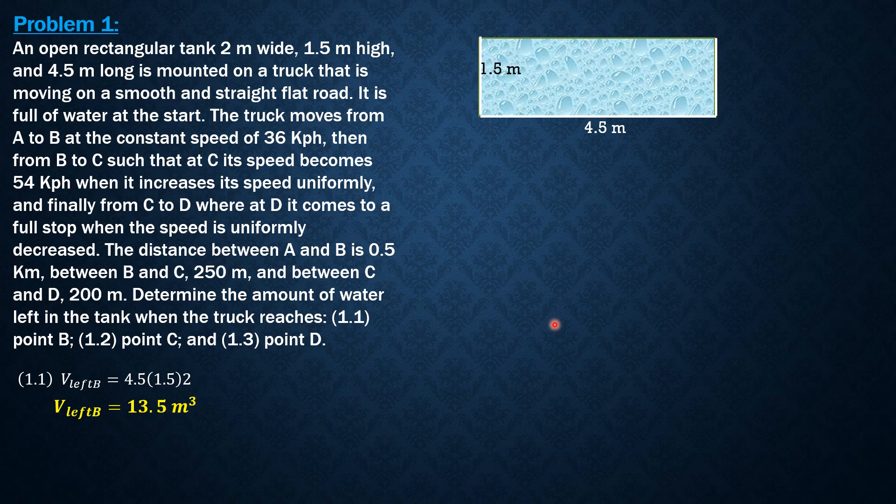So volume left in the tank is equal to 13.5 cubic meters, and that's the answer to the first question. No liquid will be spilled for the first case. For the second situation, between B and C, the speed is uniformly increased. So let's compute for the acceleration between B and C.